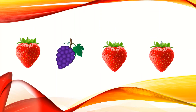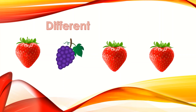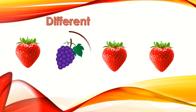We have fruits — strawberries and grapes. We have three strawberries and one bunch of grapes. So which fruit is different here? Grapes. So let's circle it. Good.